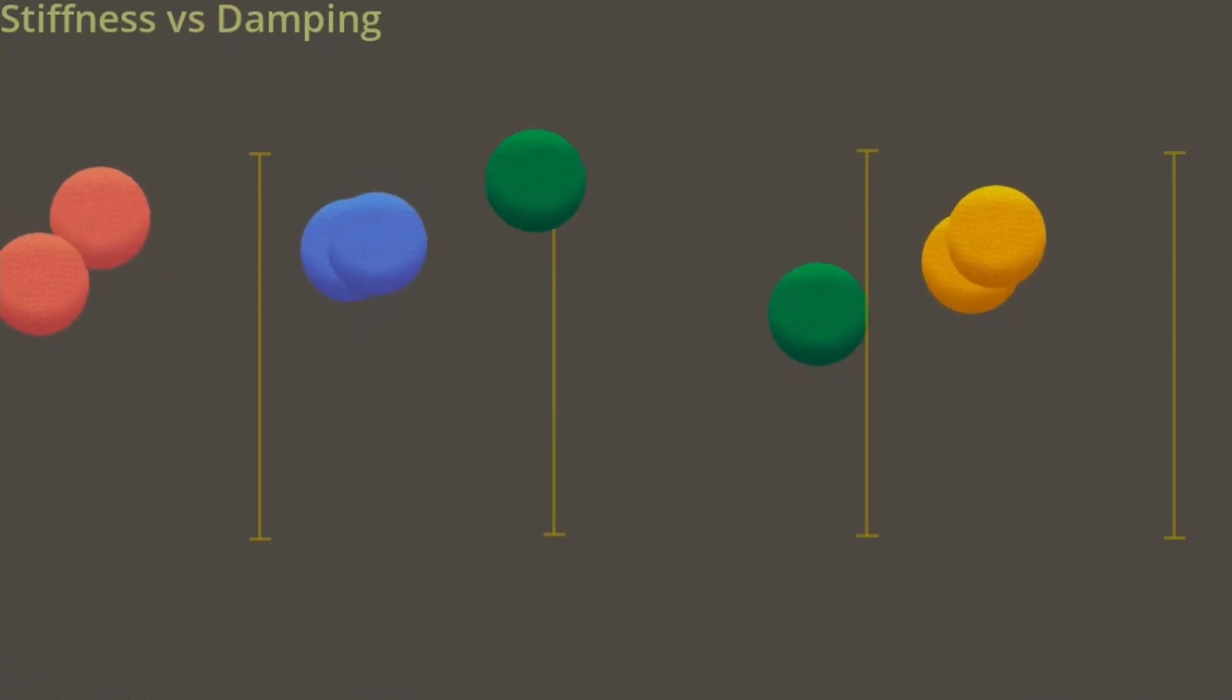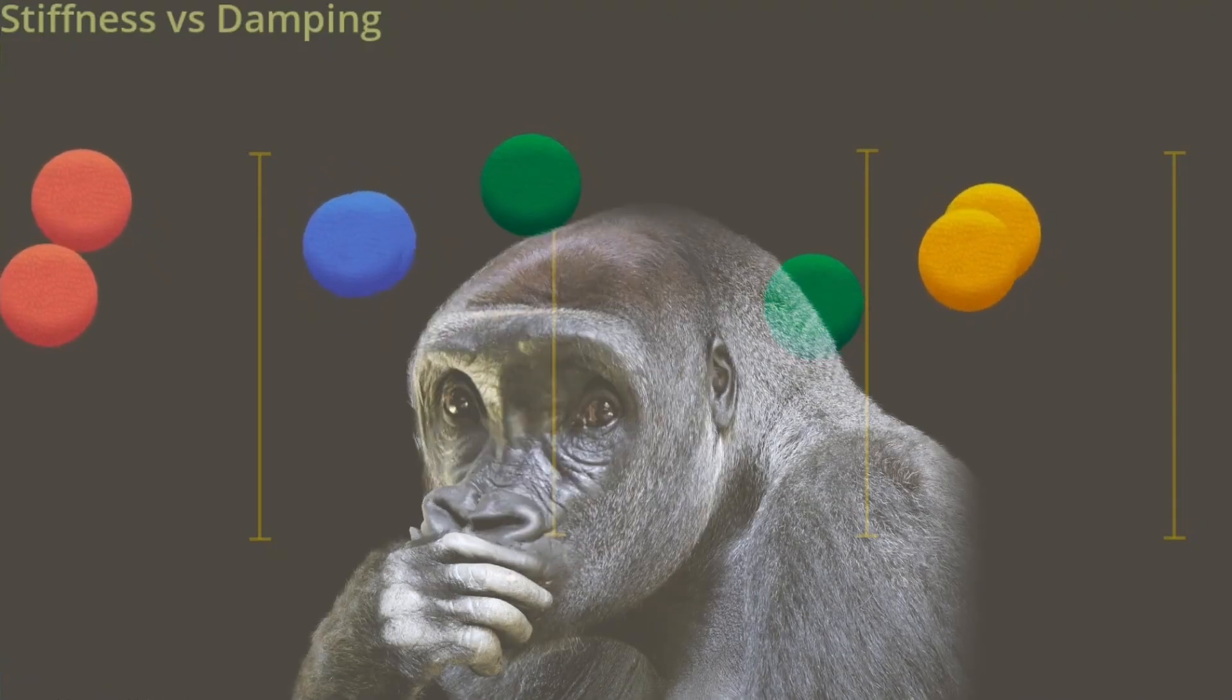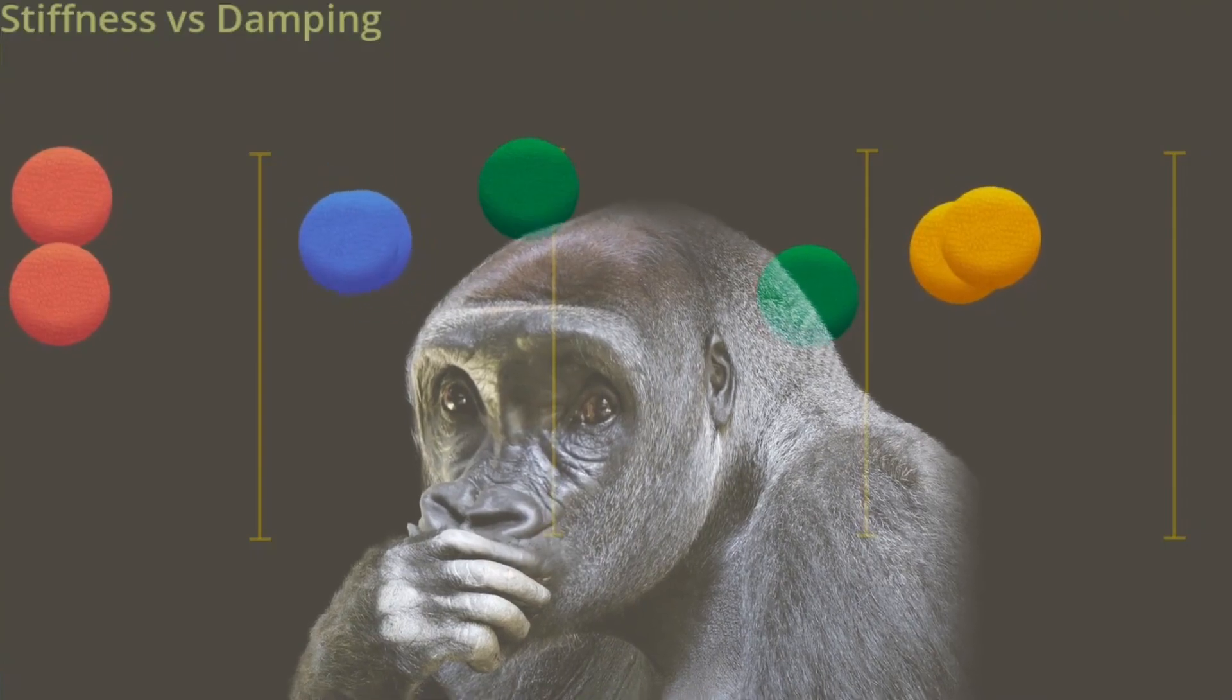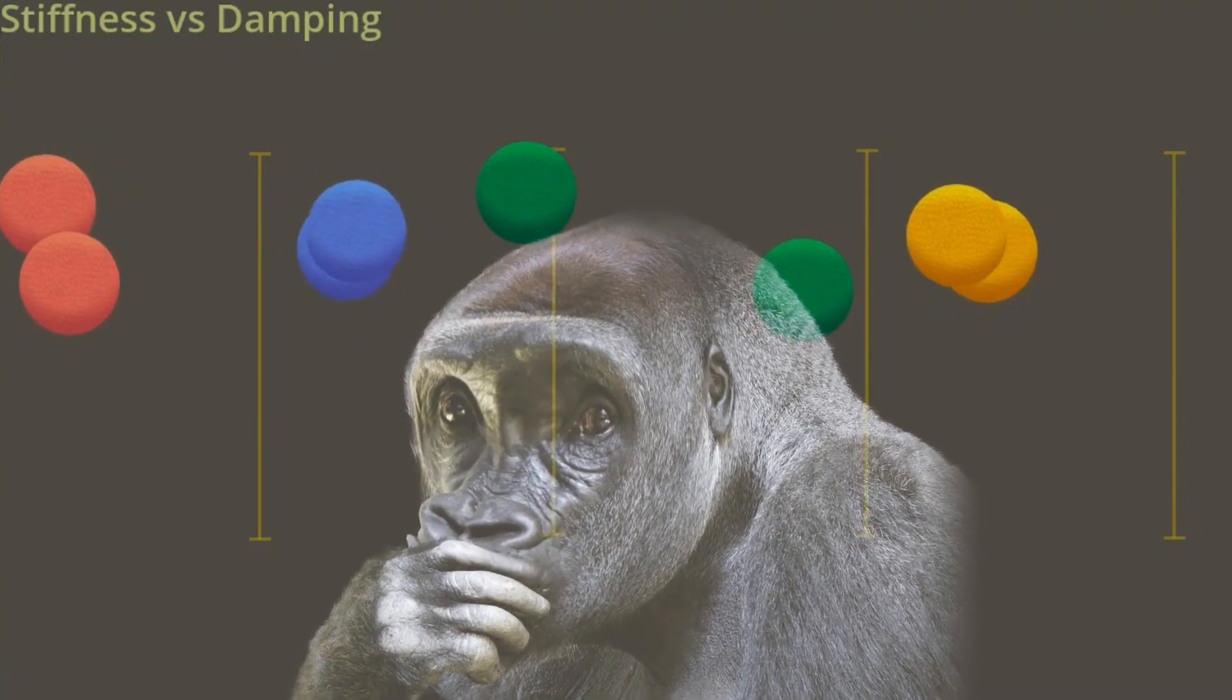So now that we more or less understand how each joint works, we can also mix and match them and combine them to get more complex behaviors.